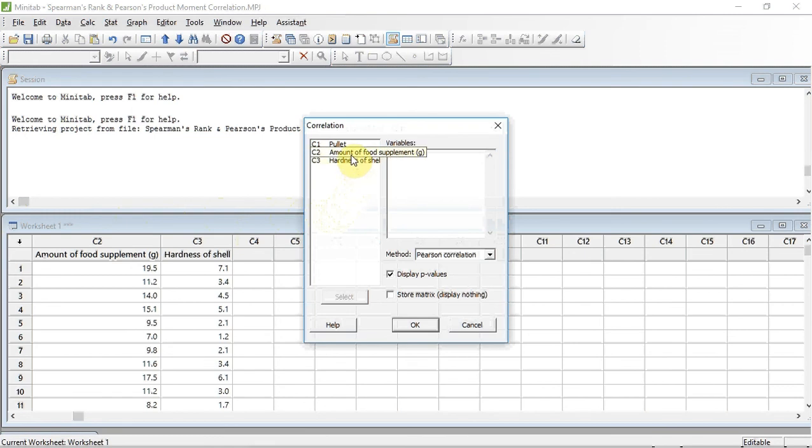I'm going to select Amount of Food Supplement, highlighting it, then pressing Select. Then I'm going to select Hardness of Shell, highlighting it, and pressing Select. These two variables now appear in my Variables box.